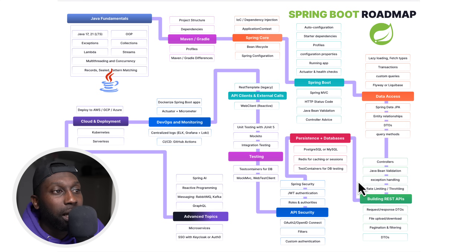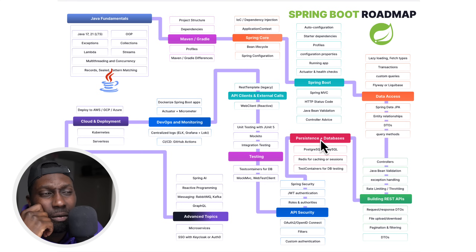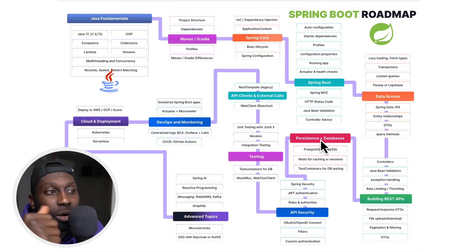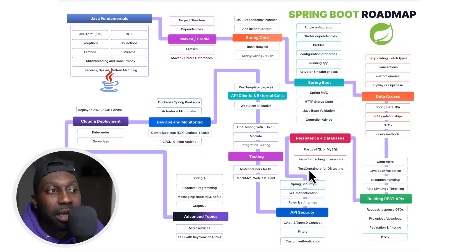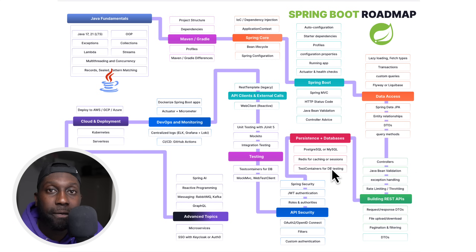For persistence and databases, you choose one database of choice — Postgres or MySQL. Then you have Redis for caching or sessions, which is very important. For testing, test containers is a very popular choice for testing your queries.